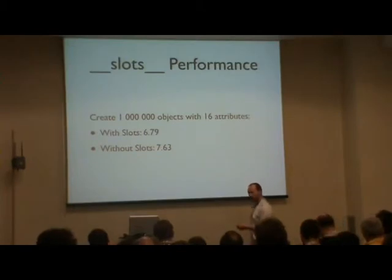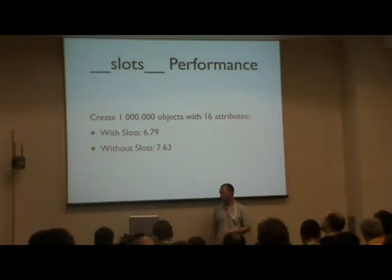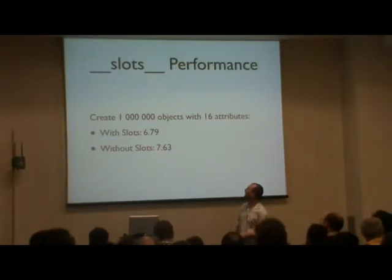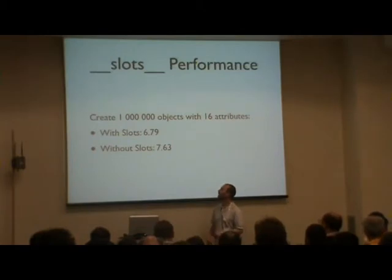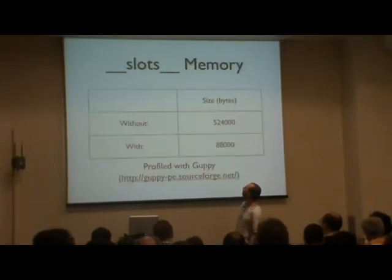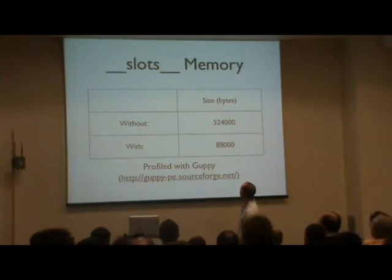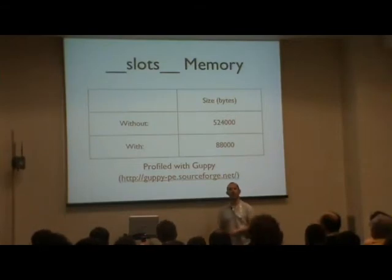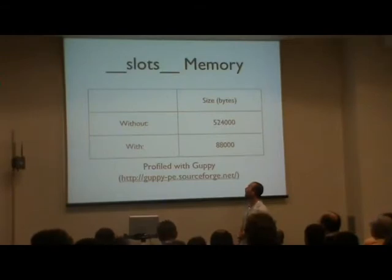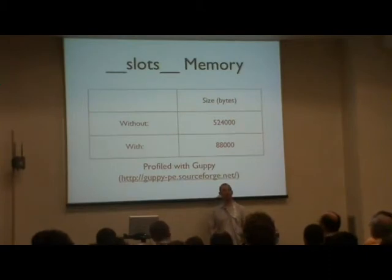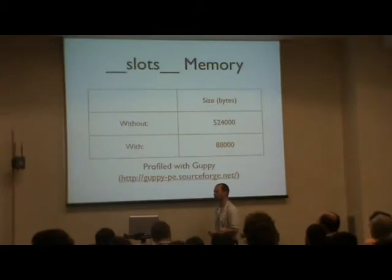So just to go into some more detail about slots — I realized the last time I talked about slots I didn't really know what the benefit was. I had a vague idea it was faster, and a vague idea it used less memory. So I did a test: I created a million objects with 16 attributes each. You find about a 10% improvement in speed — it's not huge. Speed is probably not the reason you use slots. The reason you use slots is memory usage. For the same objects either with or without slots, if you use slots it takes about a sixth of the memory. It's just a more efficient form of storage. Basically, if you have lots and lots of objects with the same structure — if you're thinking of tabular structures where essentially each object is a row and they all tend to have the same columns — it's worth thinking about using slots.